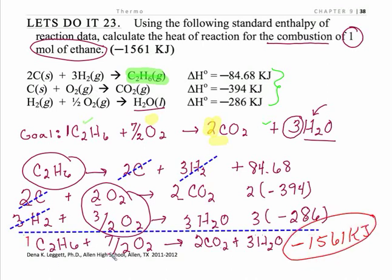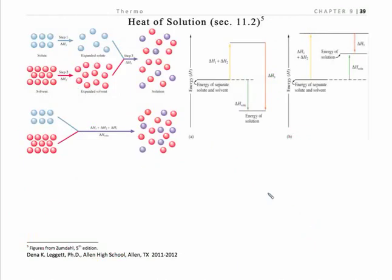Now that's per reaction as written. So that's per one mole of this, per seven halves mole of this, per two moles of CO2, and three moles of H2O. Okay, let's see how this works in other contexts and can help us with a couple of other contexts here.